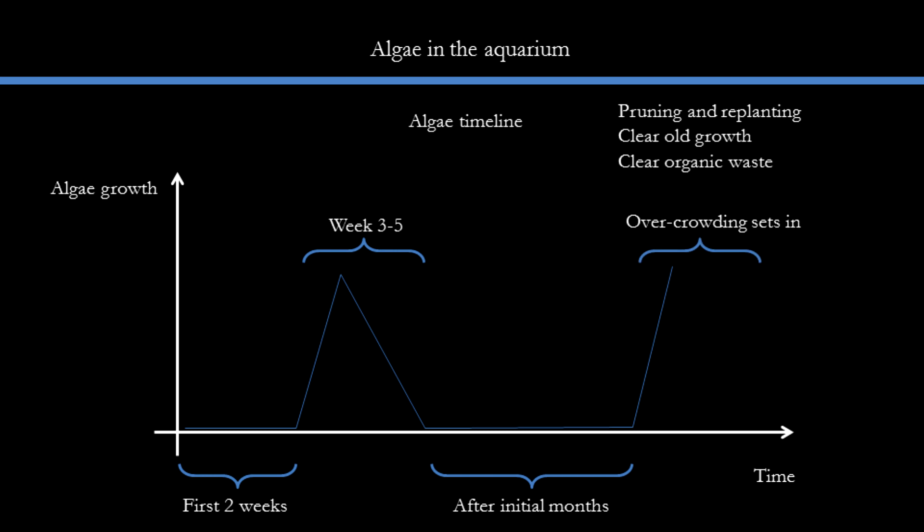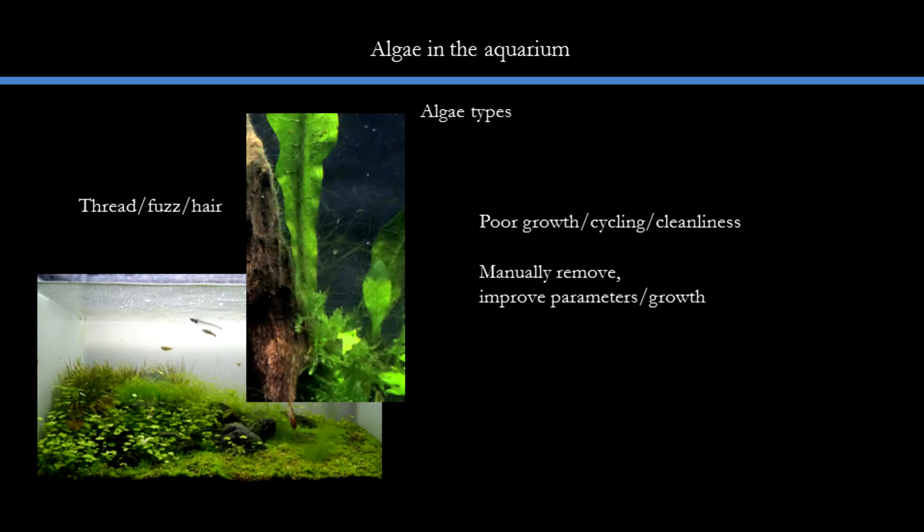After the tank has stabilized, it's pretty easy-going maintenance from then on until the plants get extremely overcrowded. When things get too overcrowded, old growth can start to rot below, the tips may not be healthy anymore, and algae will again come in. So the key is to do regular maintenance — pruning and replanting — to restore the tank to a stage of constant growth. Thread and hair algae are pretty common in a newly set-up tank, but if your growth parameters are dialed in and your plants are growing well, this will go away by itself, so I wouldn't bother treating them with harsh chemicals.